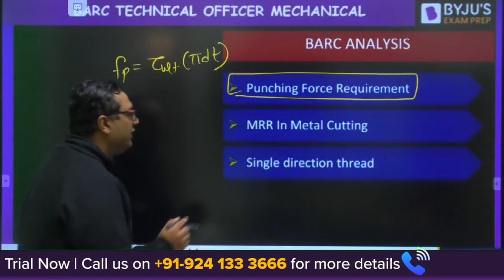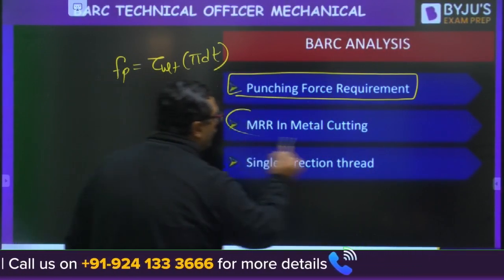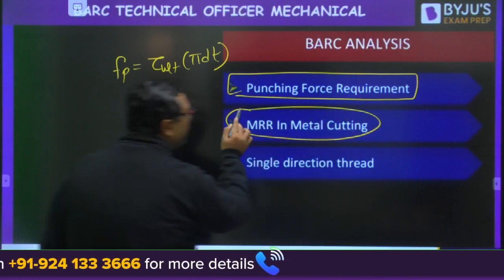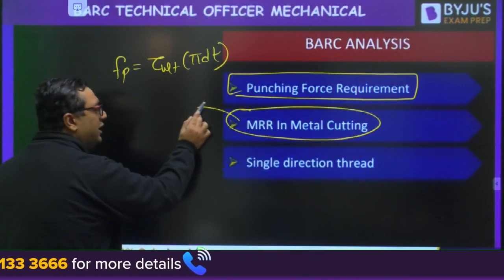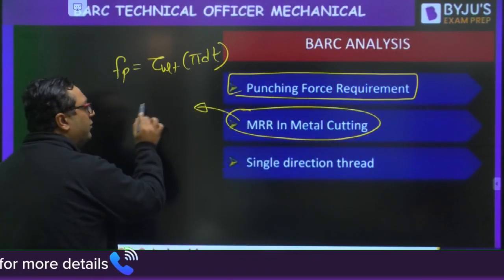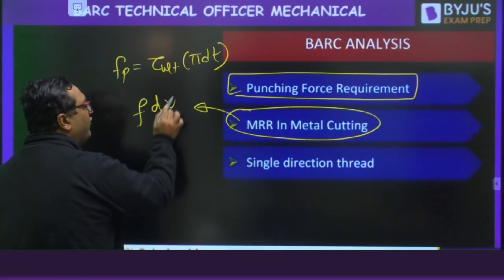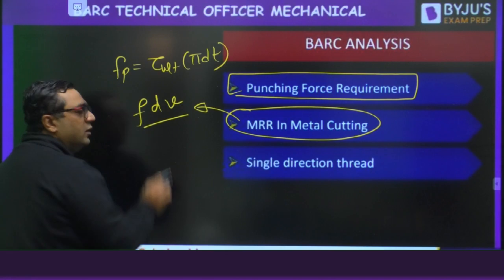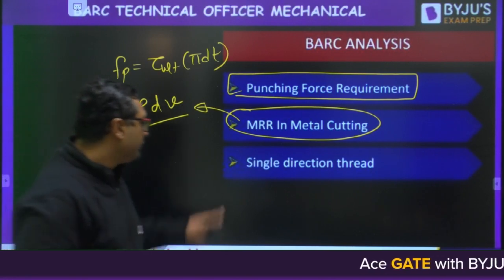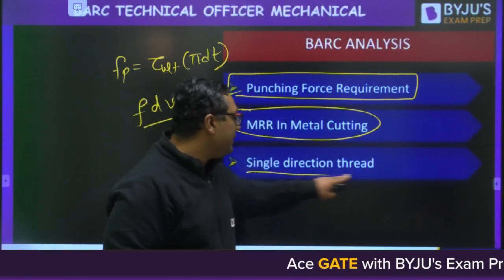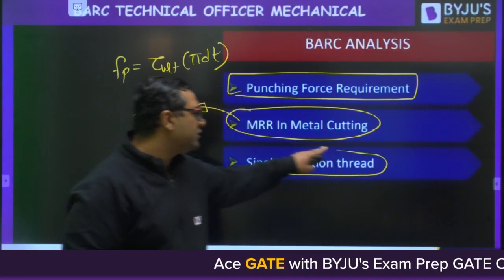There was also a question on MRR (Material Removal Rate) in metal cutting — similar to a GATE problem where we apply the formula F × D × V: feed, depth of cut, and velocity. Then there was a question on single direction thread, from thread application, and I will show you exactly what that question was.